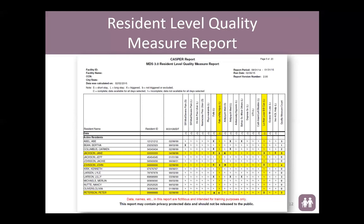In each column, you will notice either an alphanumeric character or an X. That X indicates if the resident has triggered that measure. In this particular example, they have highlighted falls with major injury and low-risk bowel and bladder continence and the residents triggering for those measures — an example of how you can use this report to analyze the data and investigate your care practices.